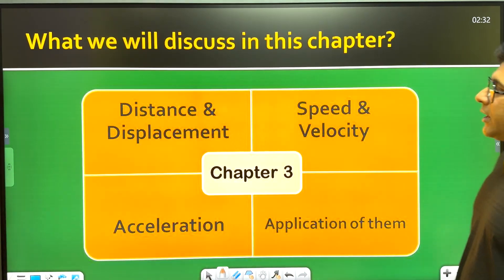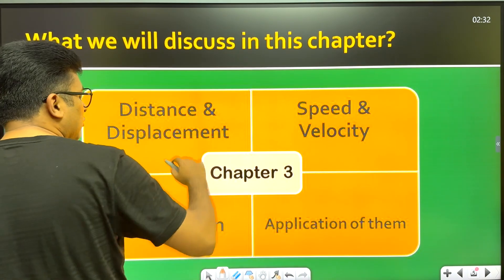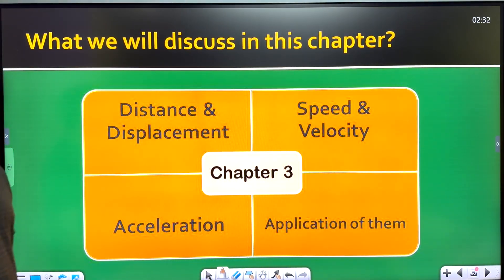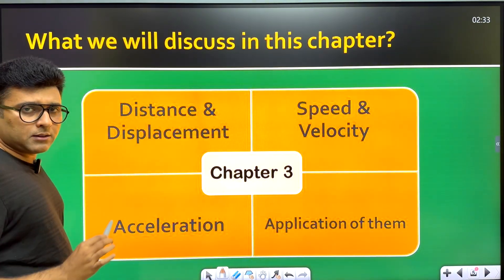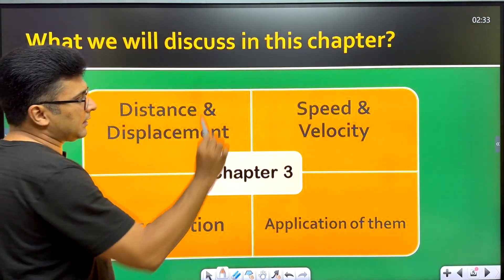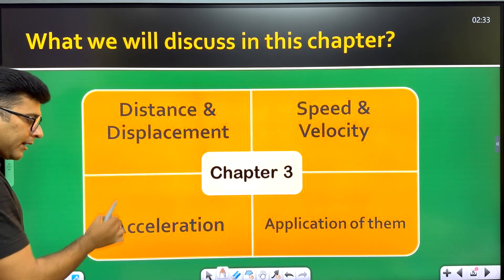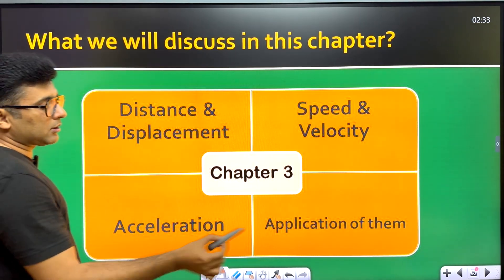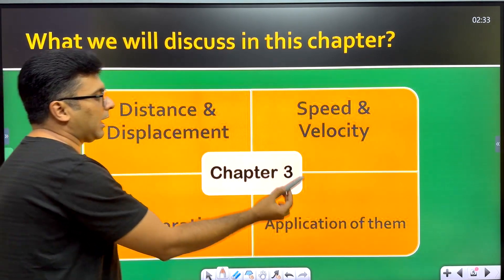In this chapter, we will discuss the following topics. First, distance and displacement. Then speed and velocity. Next, acceleration. And finally, the application of these concepts. These are the main things we will cover.